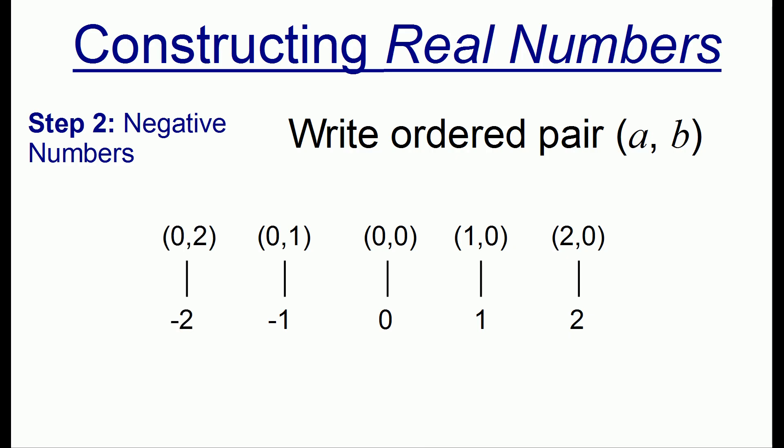So negative 1 will be 0 comma 1, negative 2 will be 0 comma 2, and so on. So in this way we can take the positive numbers and build up all the negative numbers.